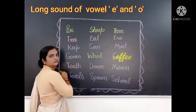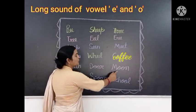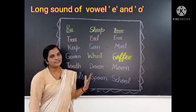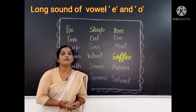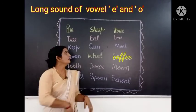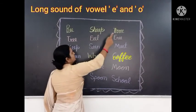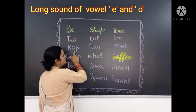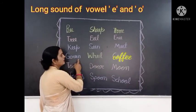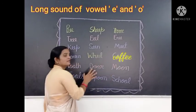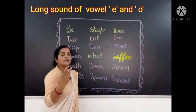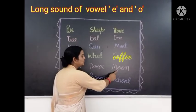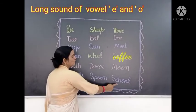Now the long sound of vowel O words: Tooth, tooth, door, moon, tools, spoon, spoon. Okay students, are you understanding how to read the long sound of vowel E and O words? Once again, read with me: Bee, C, tree, fee, key, see, meet, green, coffee. These are long sound of vowel E words. Now: Tooth, door, moon, tools, spoon. Okay?